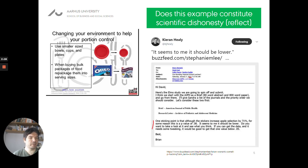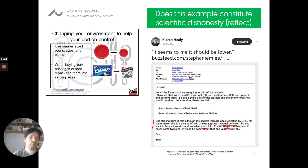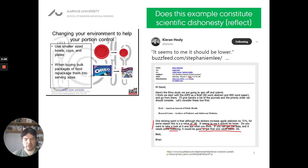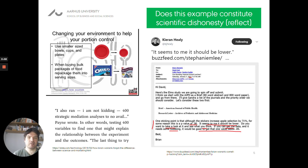In the email, he writes that one sticking point is that the p-value was 0.06, and 'it seems to me it should be lower.' He asks research assistants to look at the data, and says 'if it needs some tweaking, it would be good to get that one value below 0.05' — the traditional cutoff point for publishability. 'It seems to me it should be lower. You need some tweaking.'